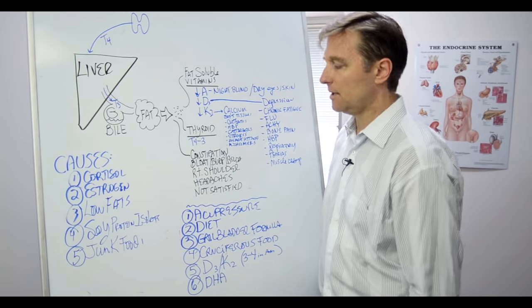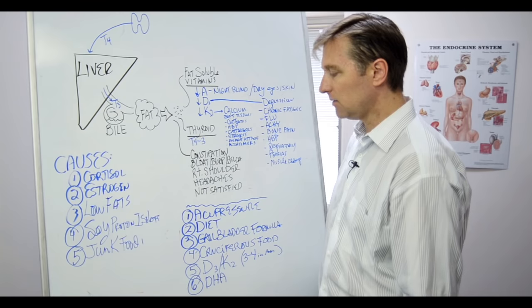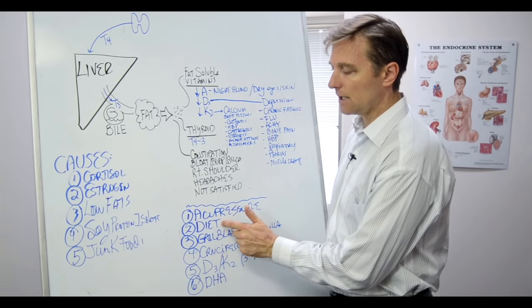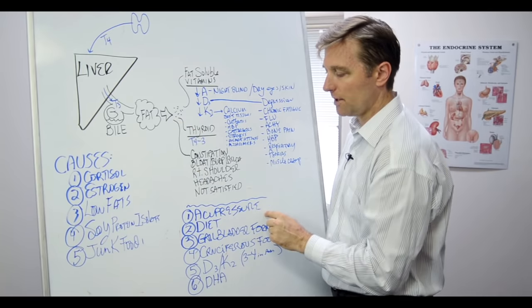we're going to show you in the next part how to do acupressure to the gallbladder and the pancreas. So you're going to do that to yourself. You're going to change your diet. You're going to get off the sugar and have healthy fats to start triggering this combination of acupressure.